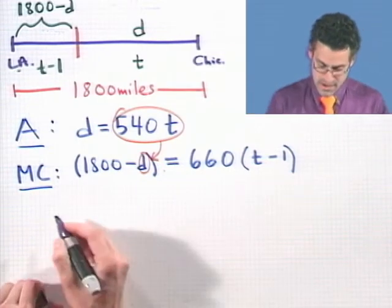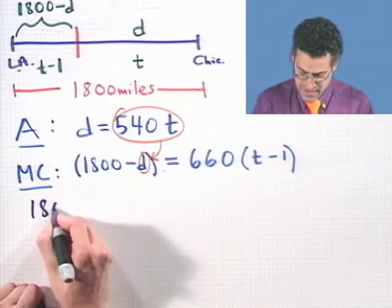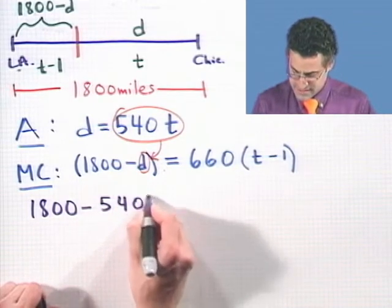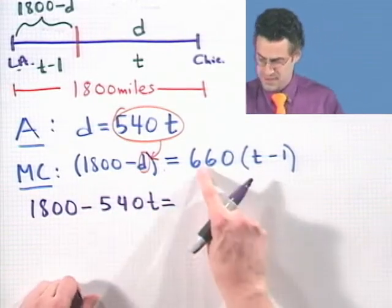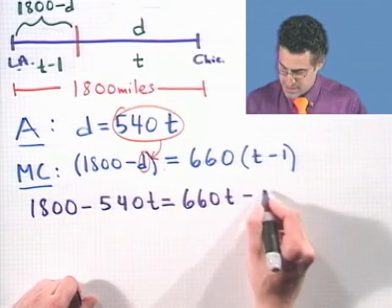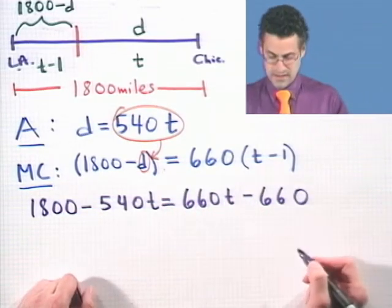If I do that, here's what I get. I see that we have 1,800 minus 540 T equals, and let me actually distribute here. I see 660 T minus 660.